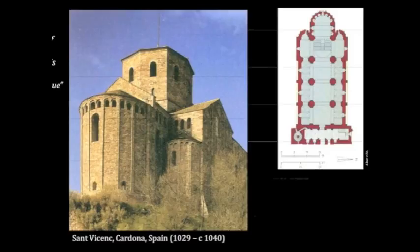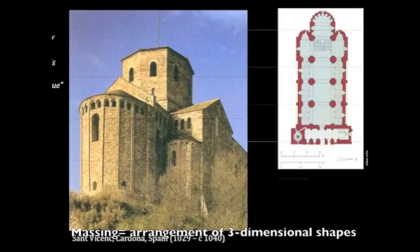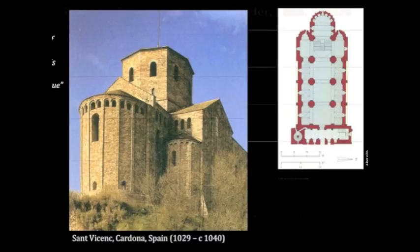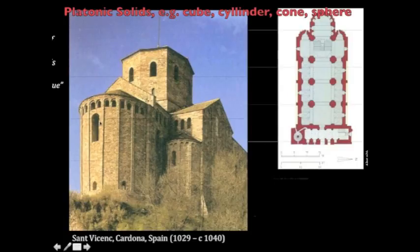What do I mean by massing? It has to do with the solid of the exterior — the basic Platonic solids, the volumes that comprise the building. When we talk about massing, we're not talking about surface ornament, we're not talking about the plan. We're talking about how these different volumes go together to create an architecture.